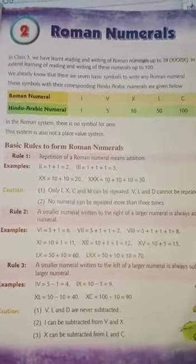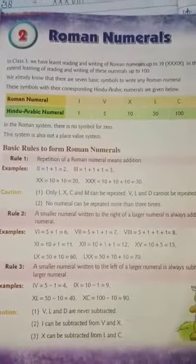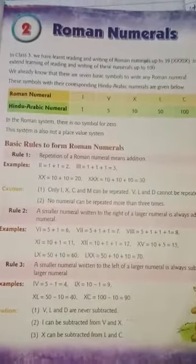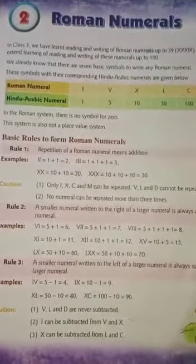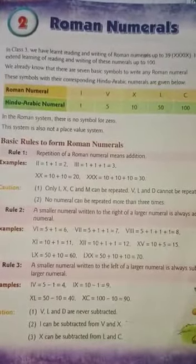In the Roman system, there is no symbol for 0. This system is also not a place value system.